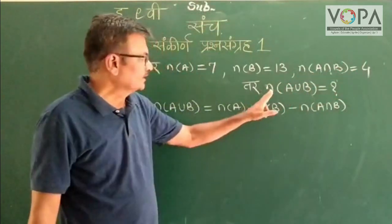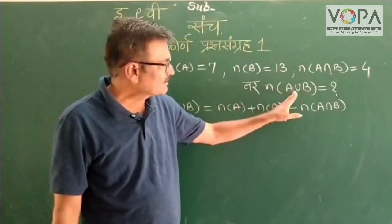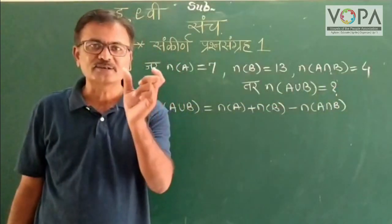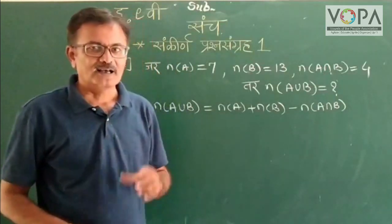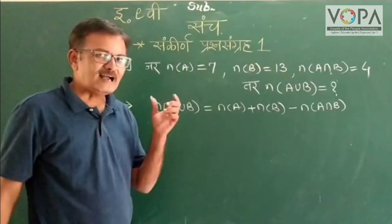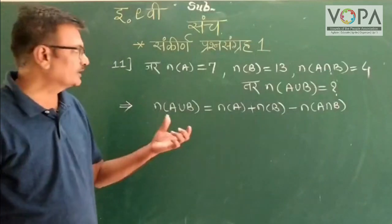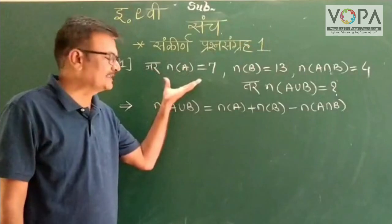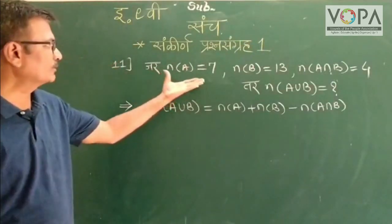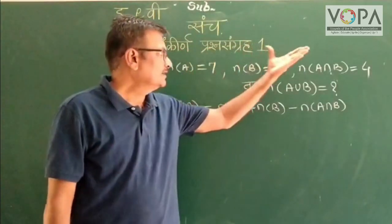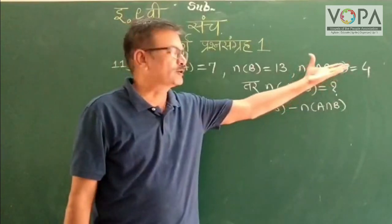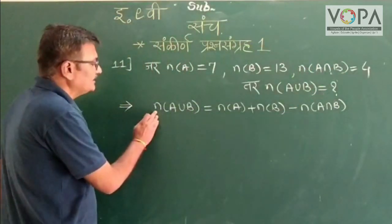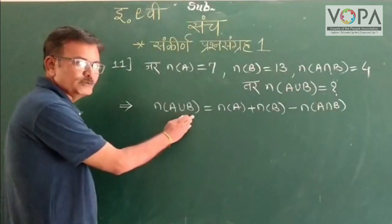...then number of A is B is 4. If the number of A is 7 and number of A is 4, then number of A is 3.